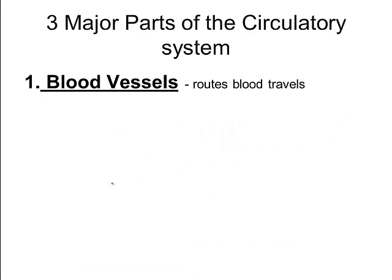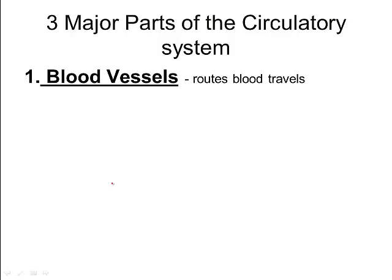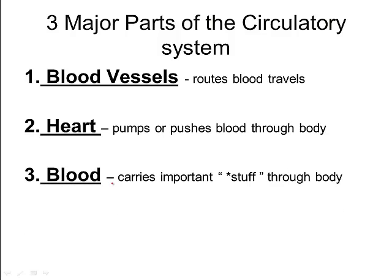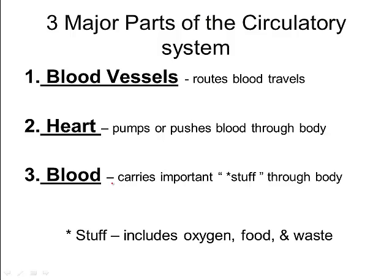Your circulatory system has three main parts. First are the blood vessels — the routes through which blood travels to all different parts of your body. You have millions of miles of blood vessels running throughout your body to reach every single cell. Your heart pumps or pushes the blood throughout the body. And the blood itself carries the important stuff needed — oxygen, different kinds of nutrients, and waste products.